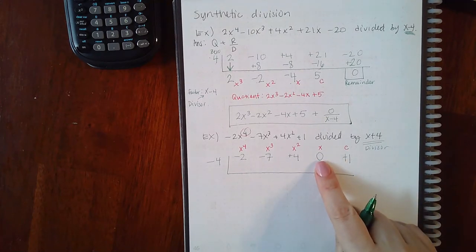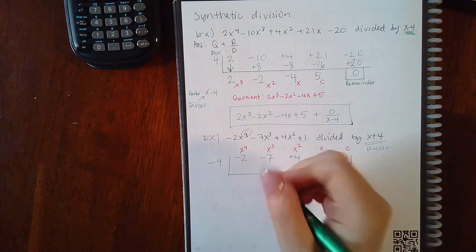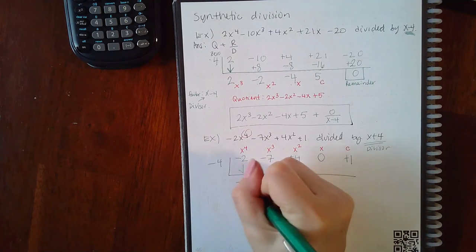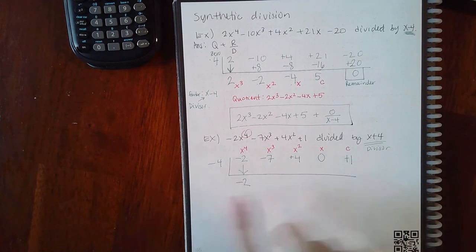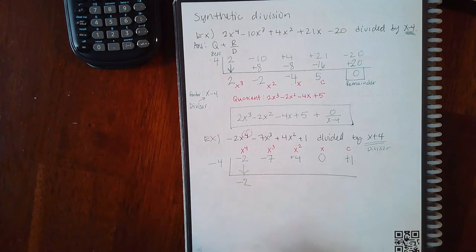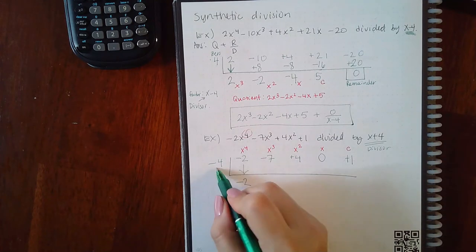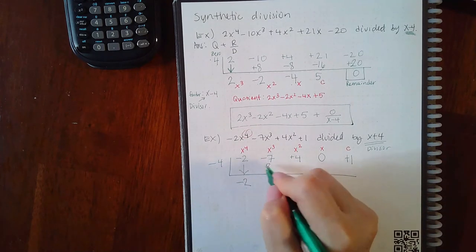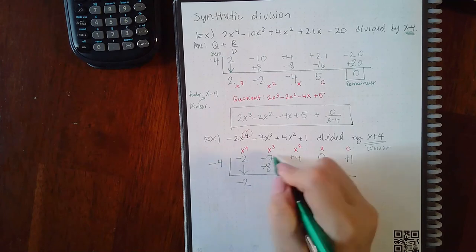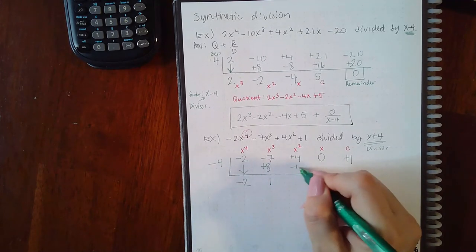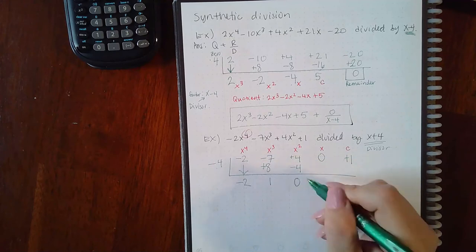Now you go through the motions. First number comes down. Anything down here gets multiplied by negative 4 and gets placed into the next spot. Negative 4 times negative 2 is positive 8. Negative 7 plus 8 is positive 1. Multiply those, I get negative 4. Combine those, I get 0.